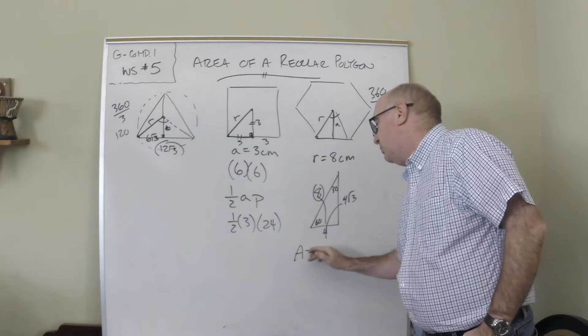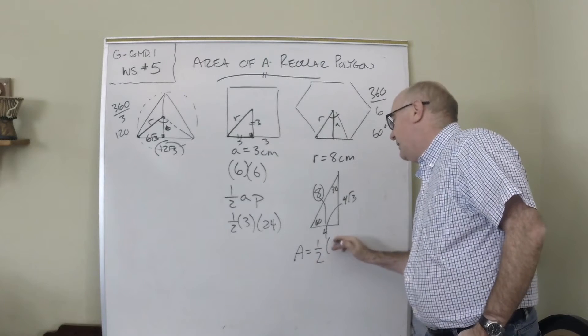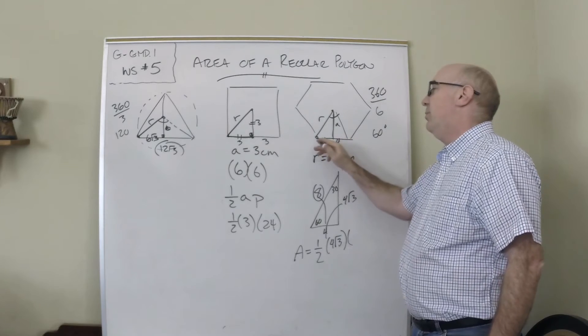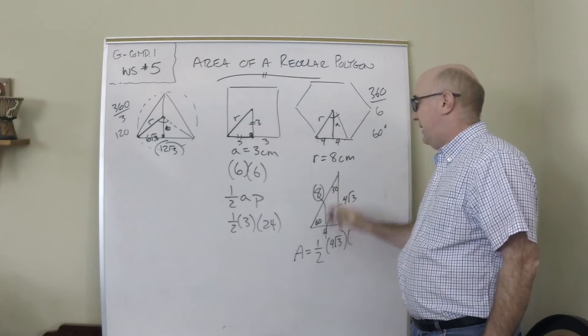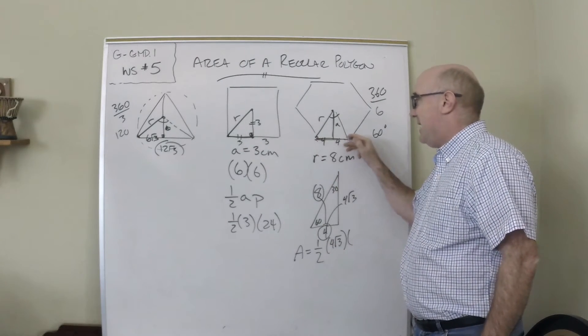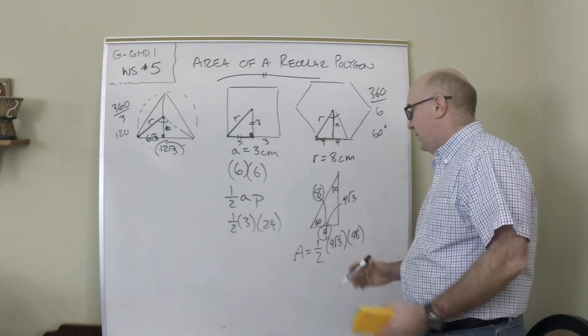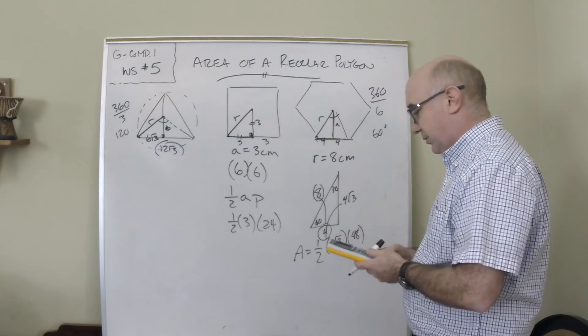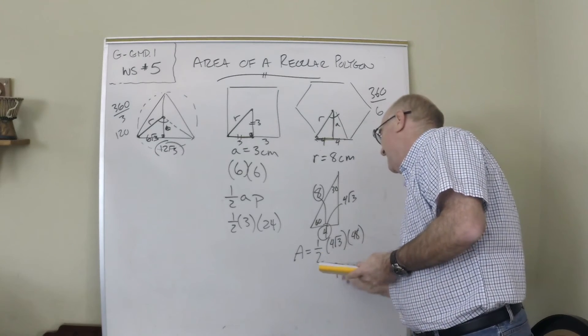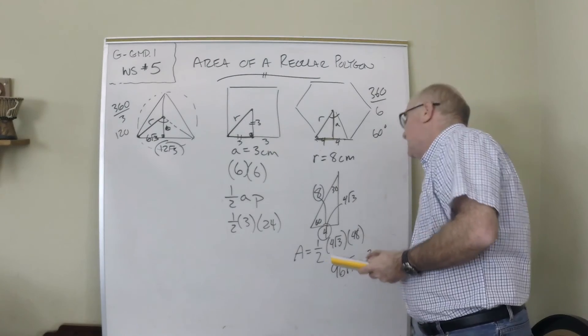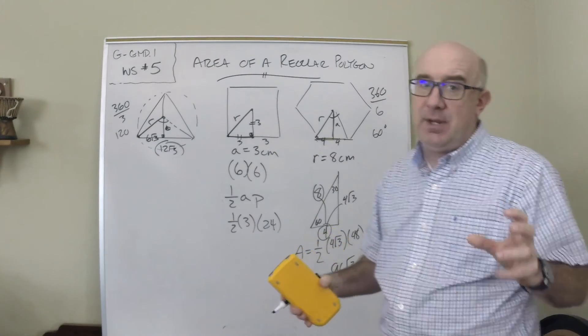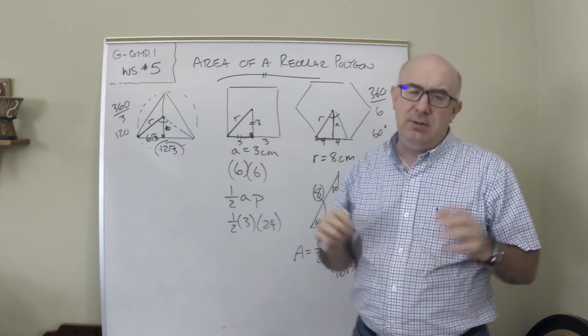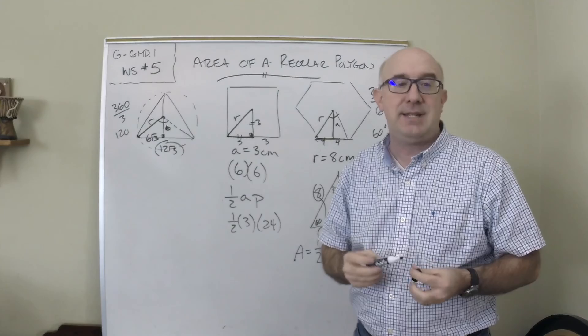Therefore, our formula would be one-half the apothem, which is 4√3, times the perimeter. Now the perimeter would be 8 times 6, that's 48, so we would multiply 48 times 4√3 divided by 2, and we get 96√3 centimeters. These are tricky, but you have to just work these three special triangles and you get a pretty good chance of them.